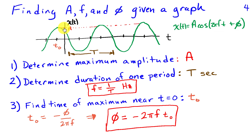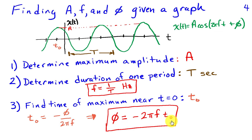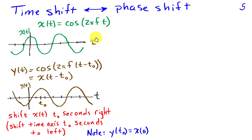In summary, from the graph: the maximum value gives us amplitude A; the duration of one period gives us frequency F as its inverse; and from the time of a maximum near t = 0, we can find the phase of the sinusoid. It turns out that the phase shift of a sinusoid can be interpreted as a time shift.